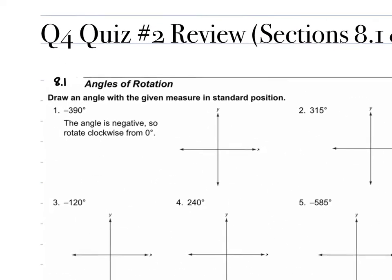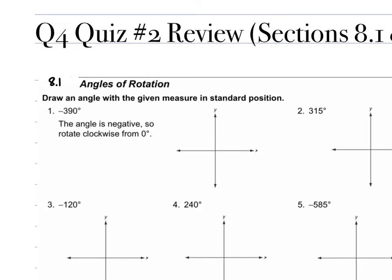With number 1, we have negative 390 degrees. We are going to start our initial side at our positive x-axis and go down and around. 360 is a full rotation, so we want to go just below 360. Make sure that we draw our arrow around and then represent it as negative 390 degrees.